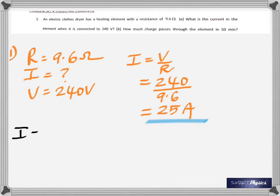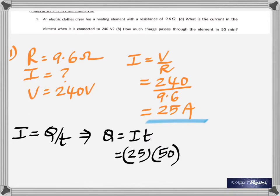The part B says how much charge passes through the element in 50 minutes. Time has got to be in seconds, and I is Q by T, so charge is the product of current and time. 50 minutes in seconds will be 50 times 60, so we get 75,000 coulombs.